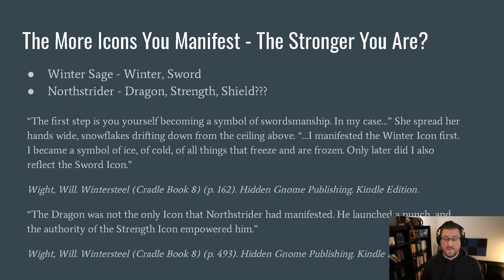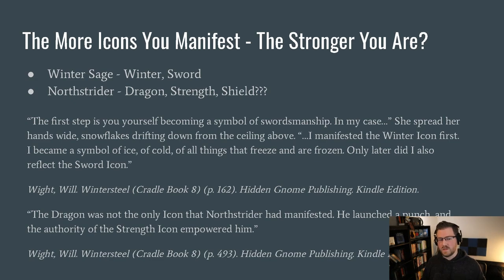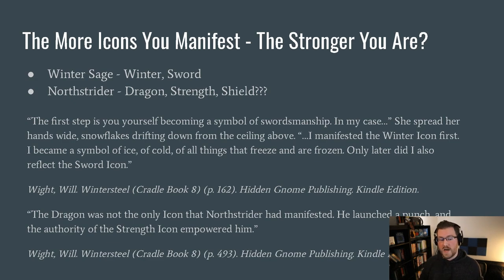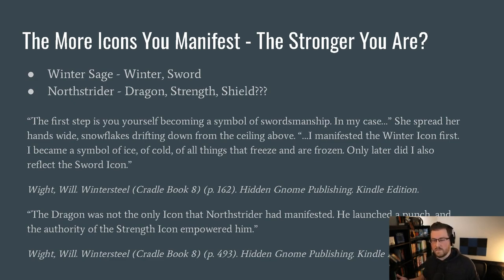We know that Min Shui has two icons because she says: 'I manifested the winter icon first — I became a symbol of ice, of cold, of all things that freeze and are frozen. Only later did I also reflect the sword icon.' And the text confirms that the dragon was not the only icon North Strider had manifested — then mentions his authority of the strength icon empowering a punch. So we don't know exactly how many icons North Strider has.